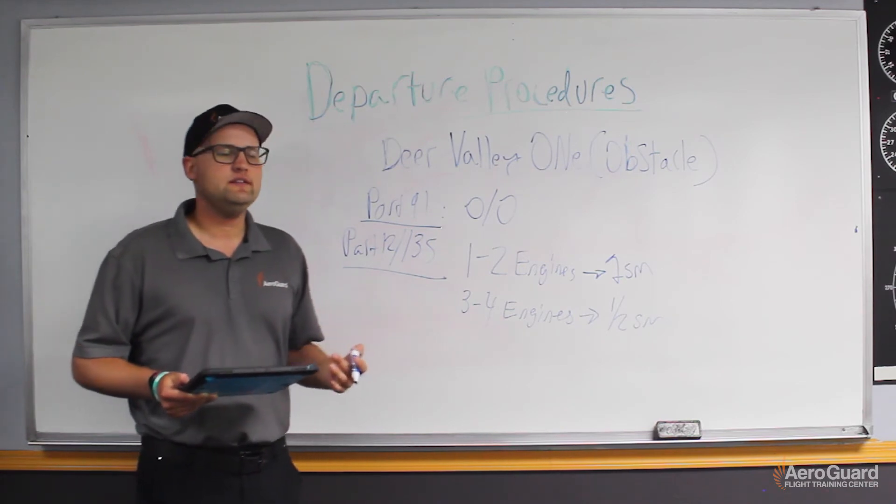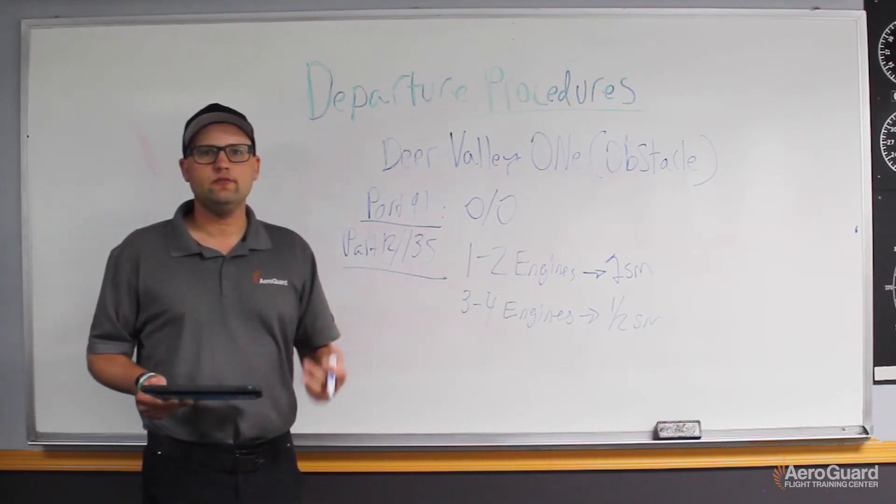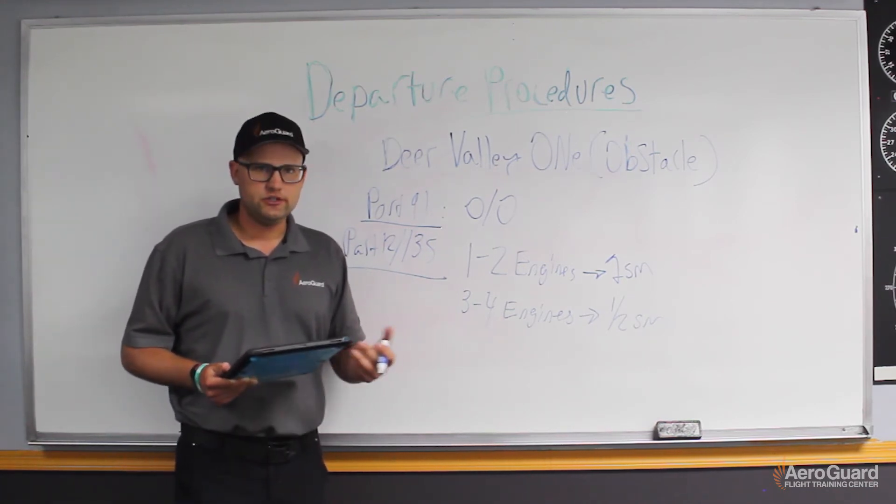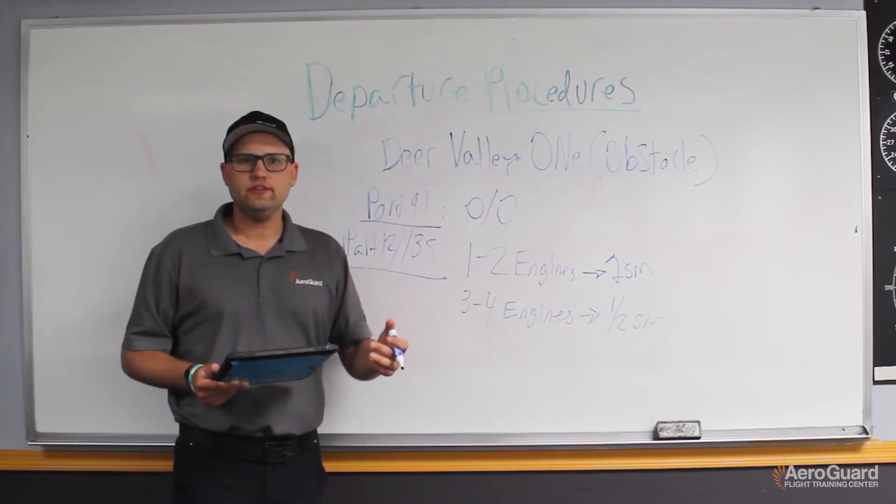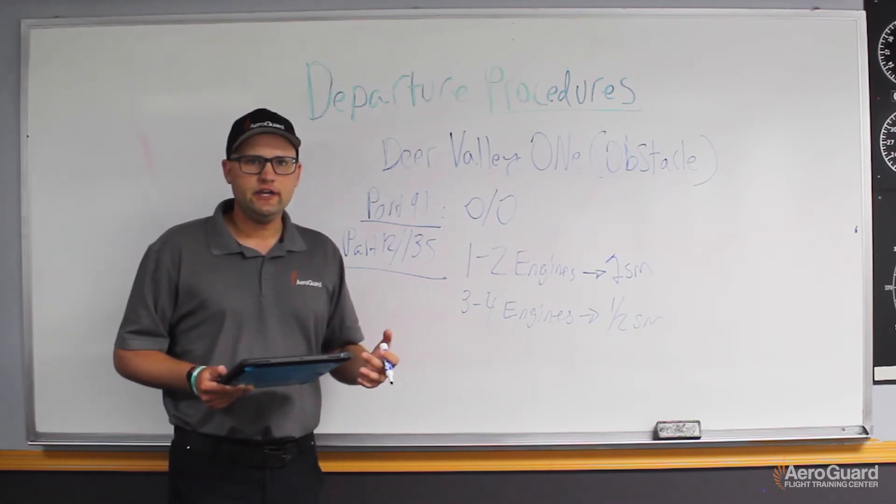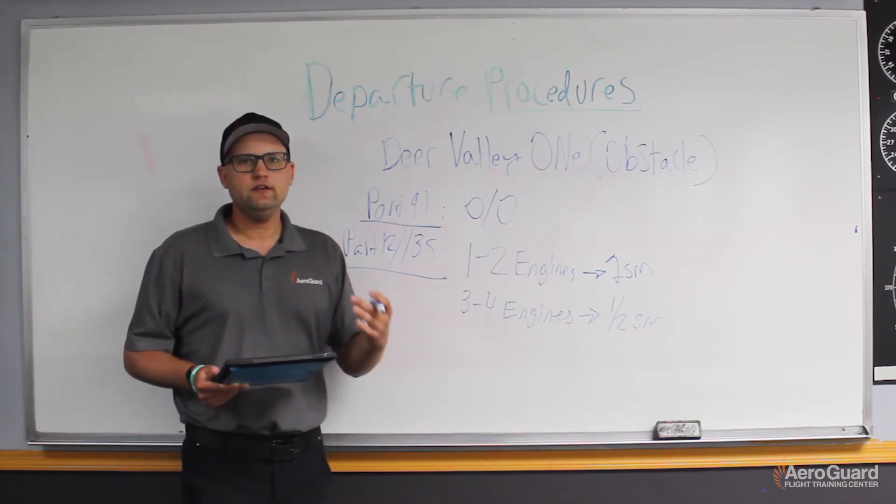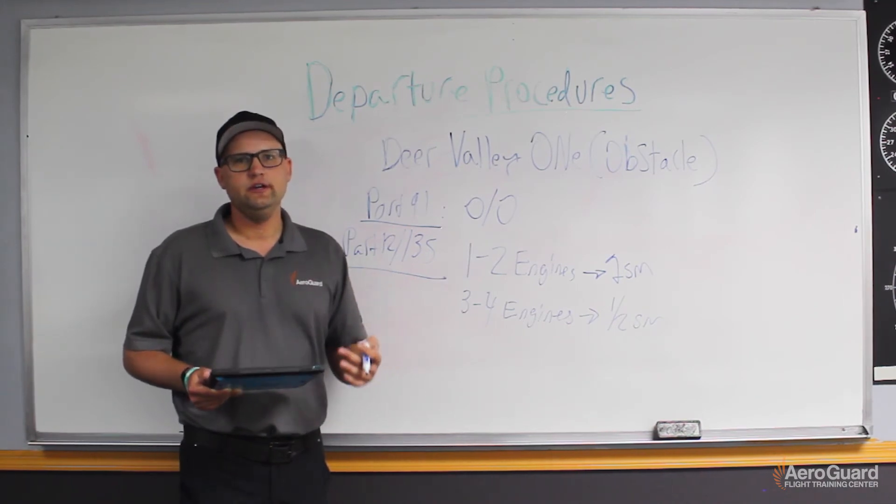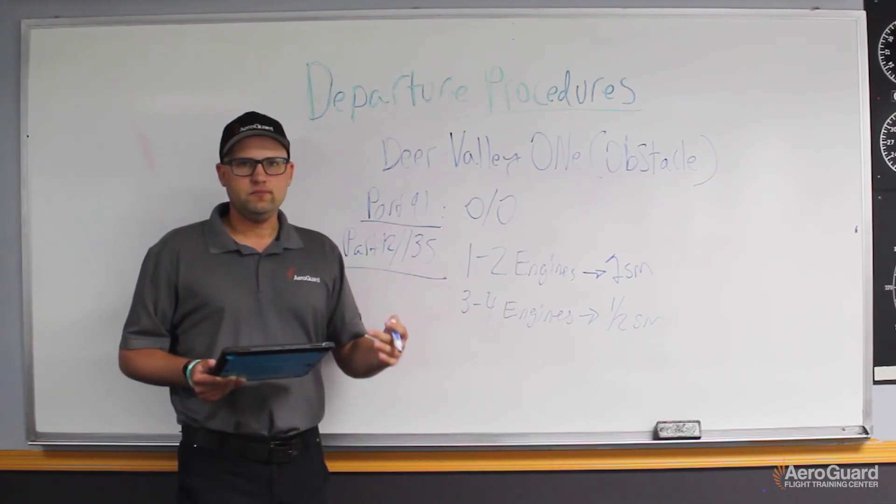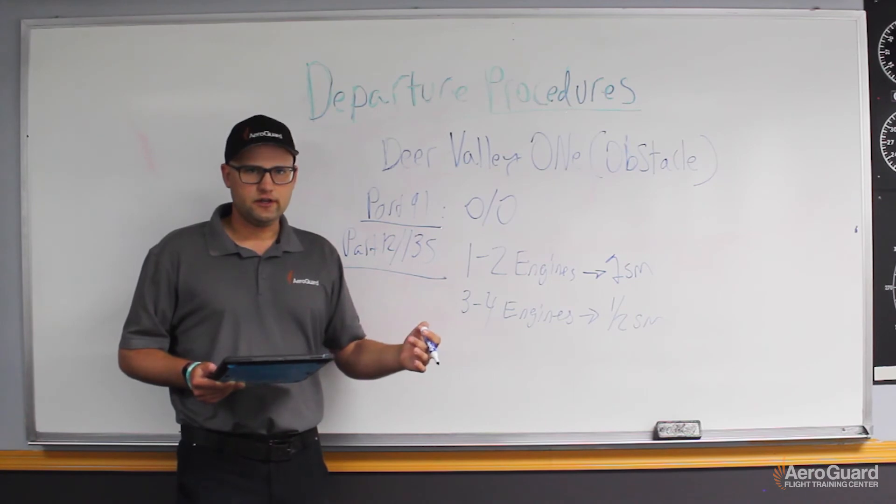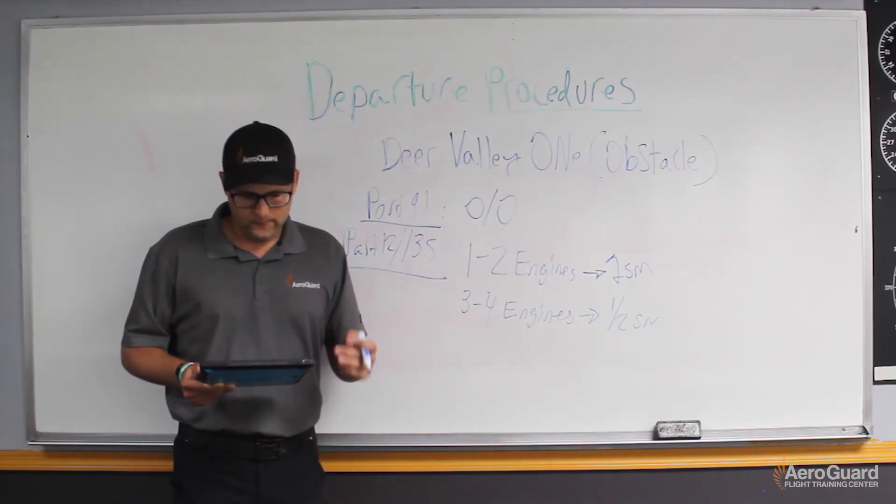So with that number, we now have our feet per minute. So if we're able to meet that feet per minute based on our climb performance with density altitude, pressure altitude of the current time of your flight, we can then calculate and estimate that we can legally fly the Deer Valley One departure if we're able to meet the feet per minute after converting from feet per nautical mile to feet per minute.